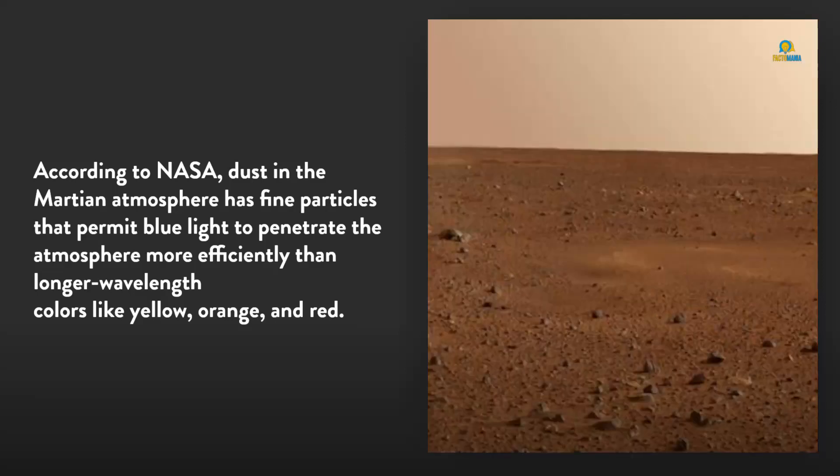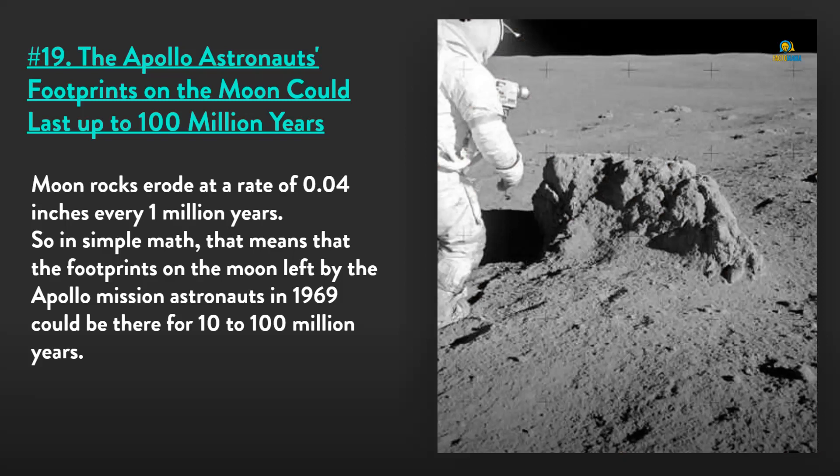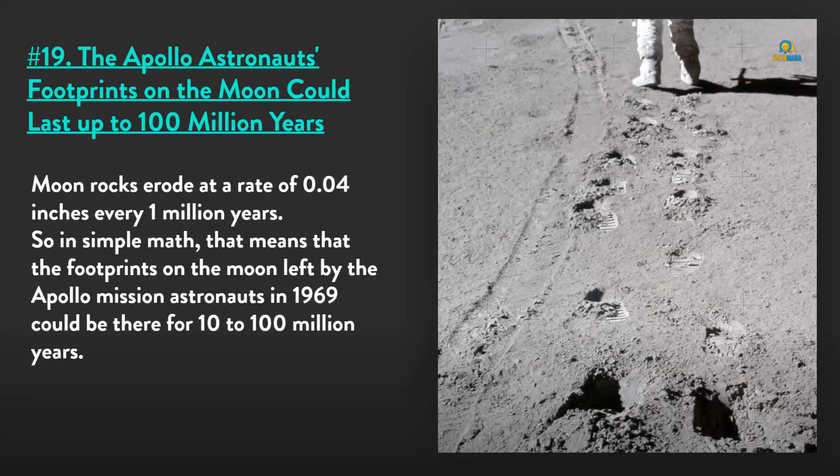Number 19: The Apollo astronauts' footprints on the moon could last up to 100 million years. Moon rocks erode at the rate of 0.04 inches every 1 million years. So in simple math, that means the footprints on the moon left by the Apollo mission astronauts in 1969 could be there for 10 to 100 million years.